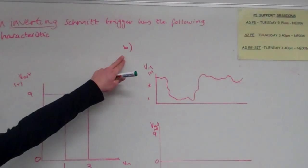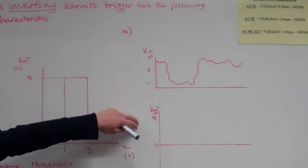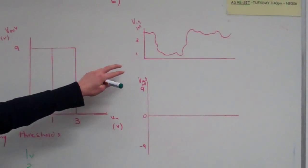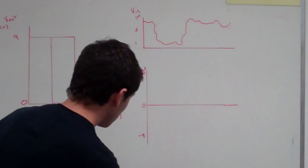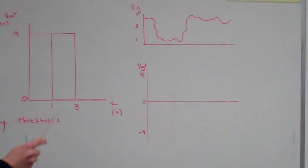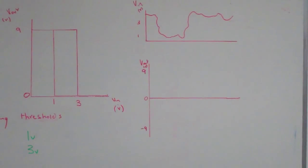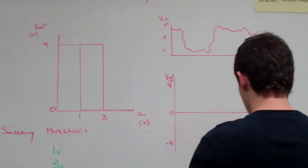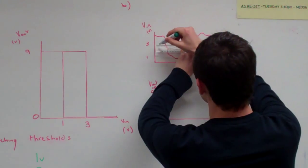Two marks, one mark. Next question, part B. We get given this diagram and this diagram. It asks you to draw the output for the Schmitt trigger when this analogue signal is applied to the input. The analogue signal is being put into our Schmitt trigger, which we know has switching thresholds of 1 volt and 3 volts. So if we draw lines across at 1 volt and 3 volts — this is the first thing you should always do.